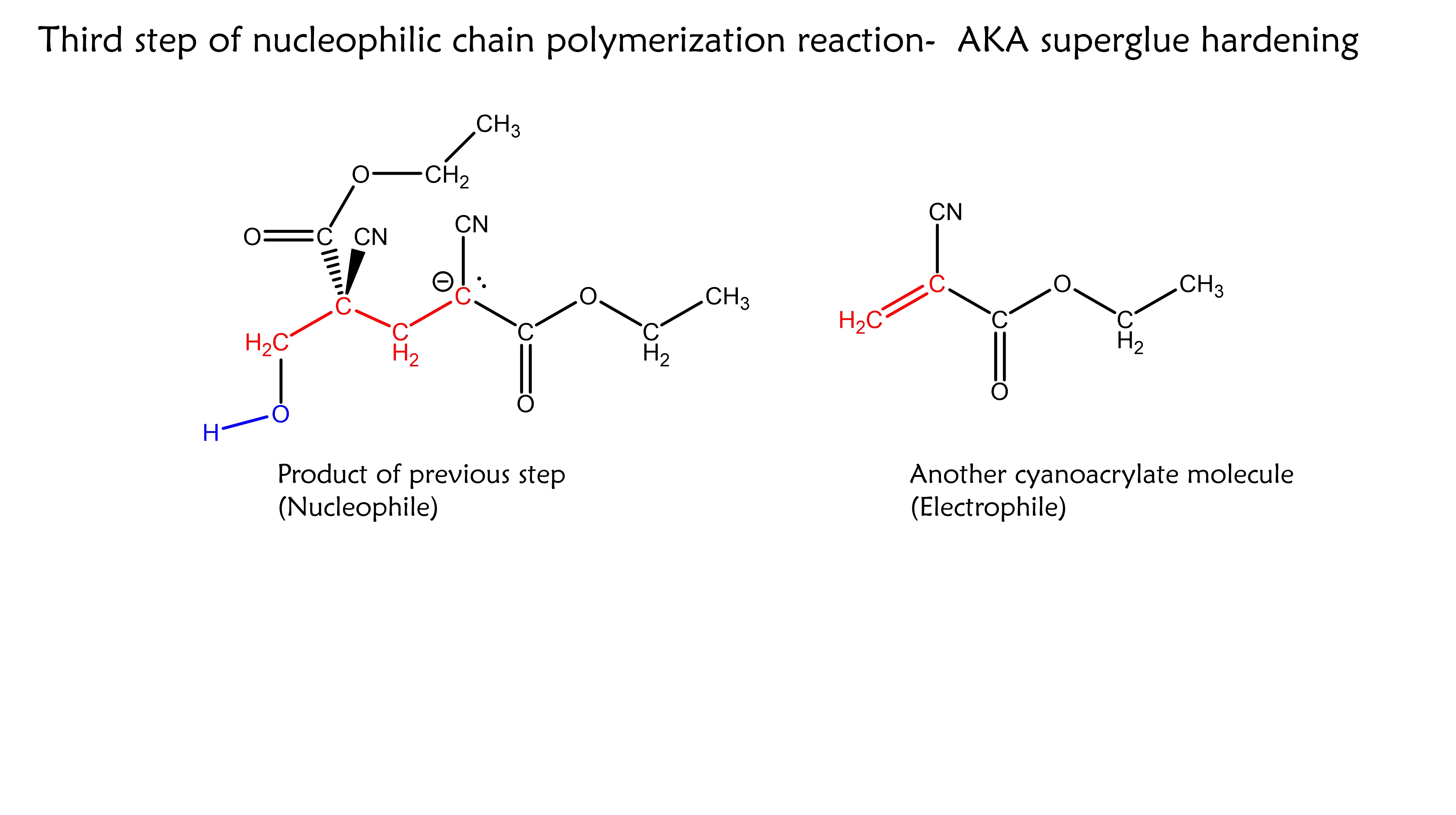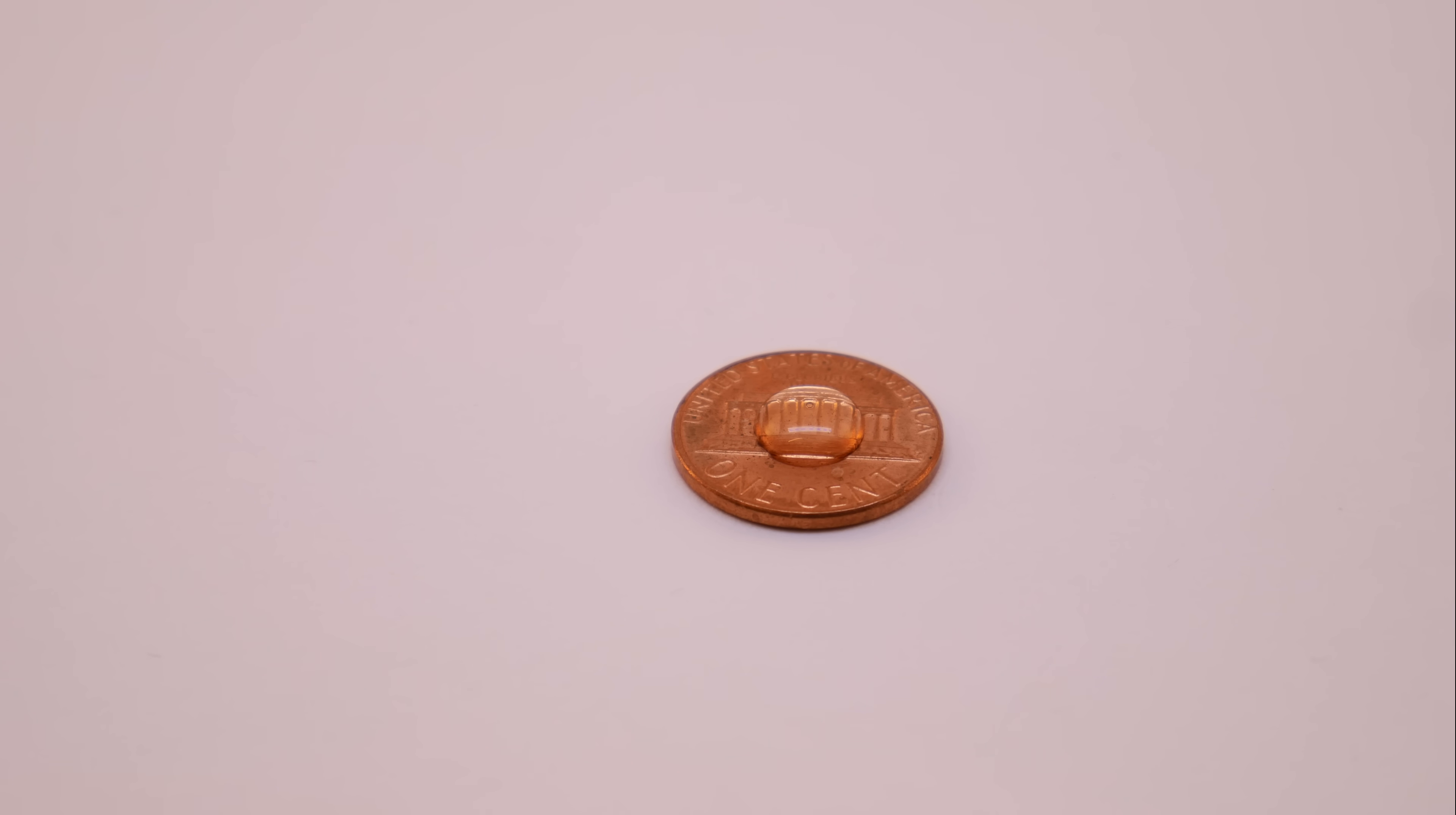This chain reaction can continue until all available ethyl cyanoacrylate monomer is used up and we are left with a polymer. Let's watch some glue polymerize with all this in mind.